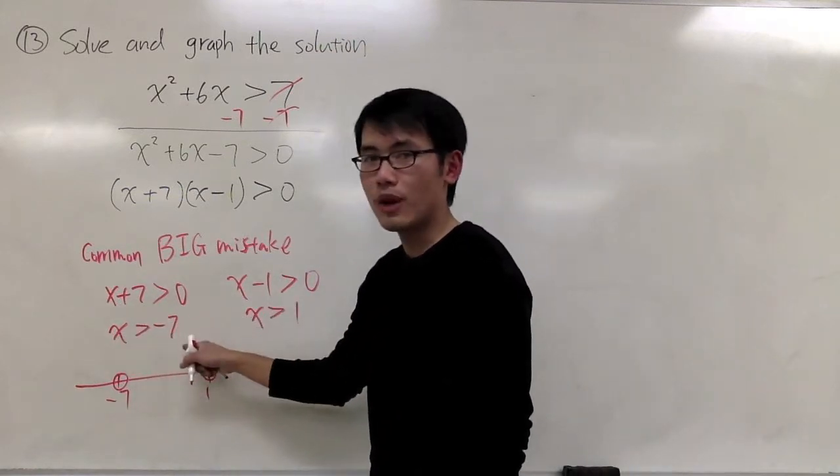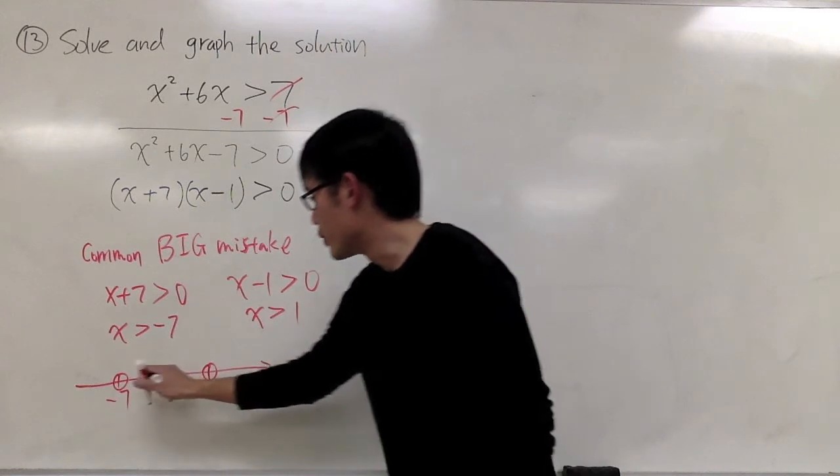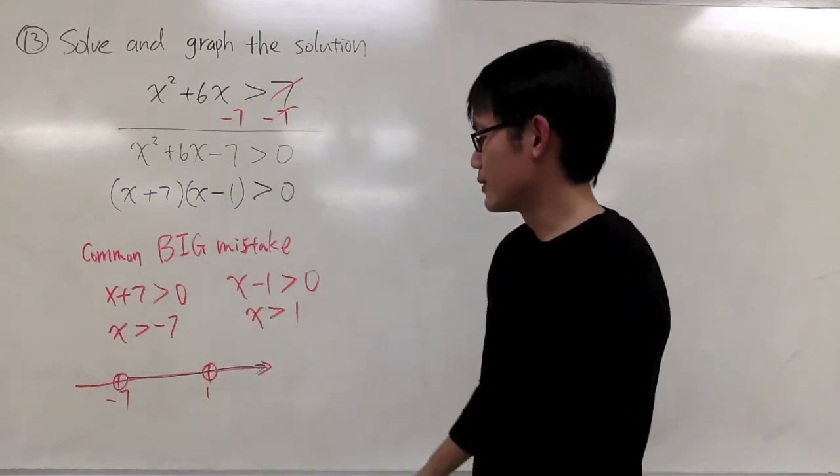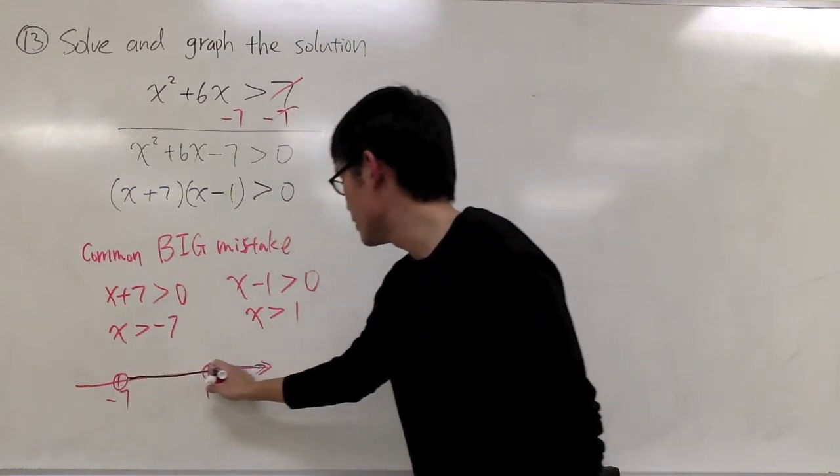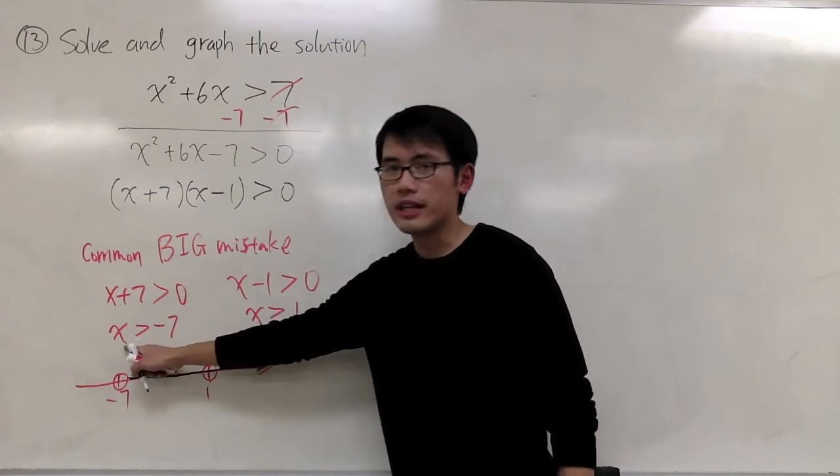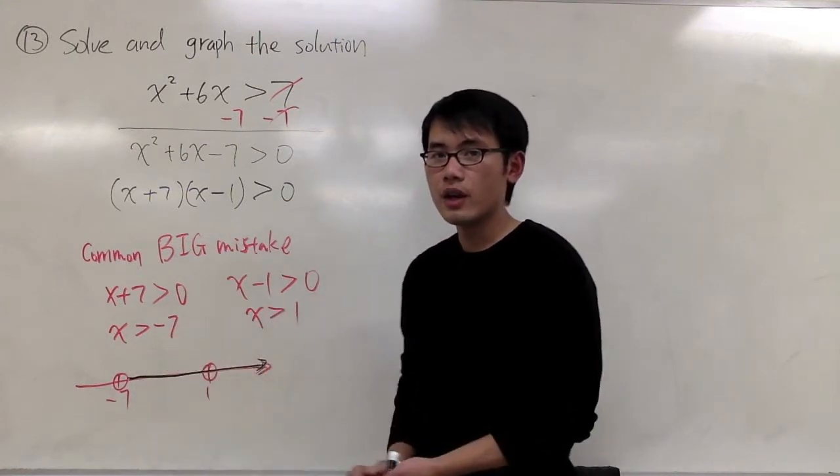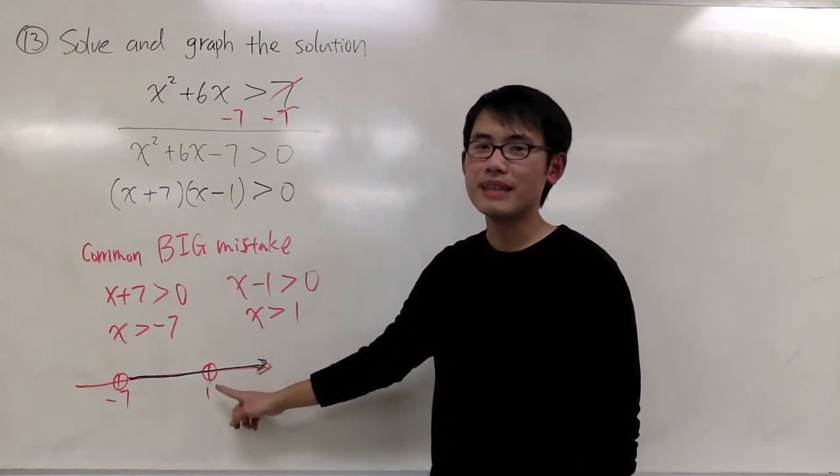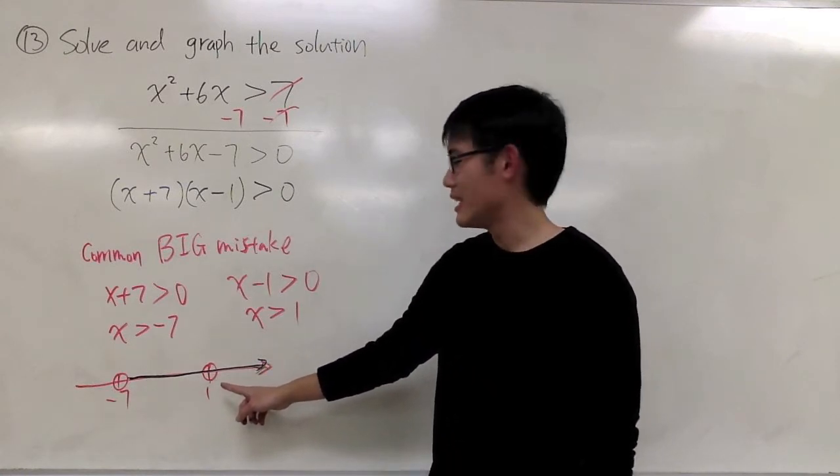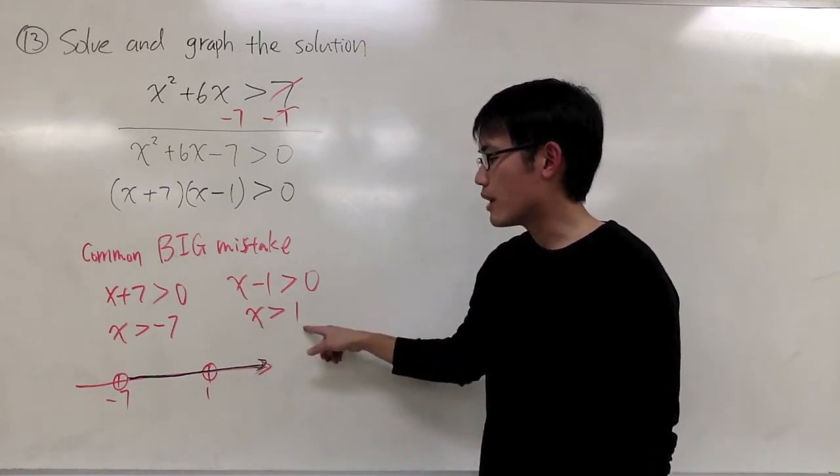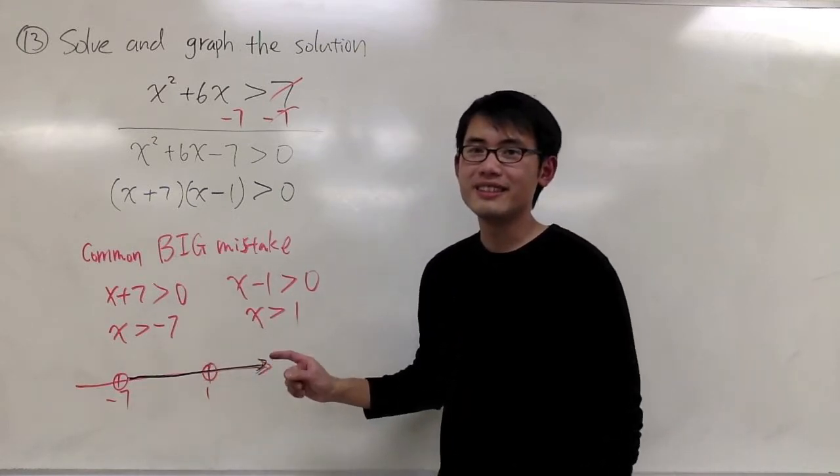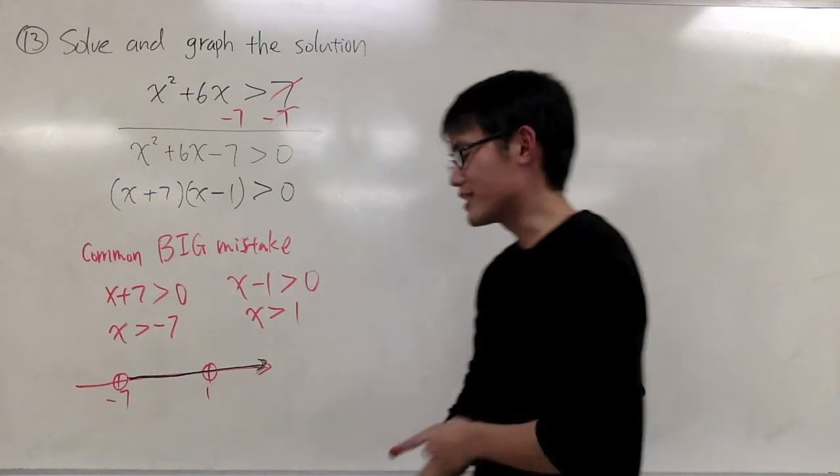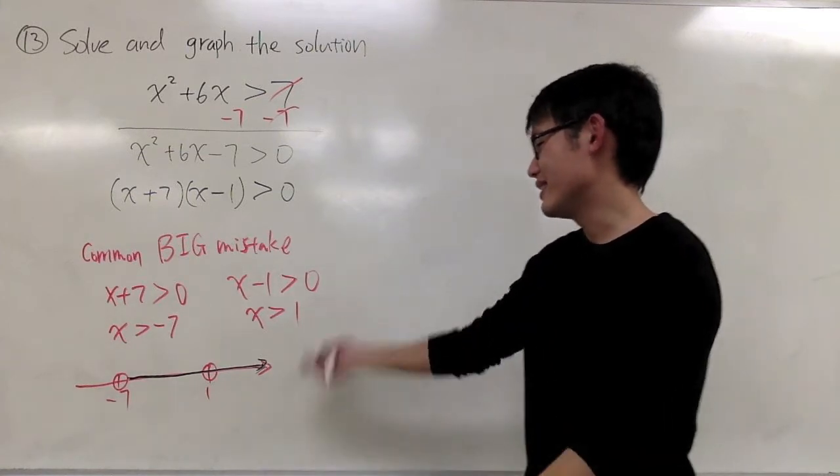When you have x is greater than negative 7, you would typically shade it to the right. I see one problem right here already. Because the very moment that you say x is greater than negative 7, once you shade this line, you actually have to cover positive 1 right here. And you just say that since x is greater than 1, 1 cannot be the answer. So this is a contradiction. This is not correct. This just doesn't work out.